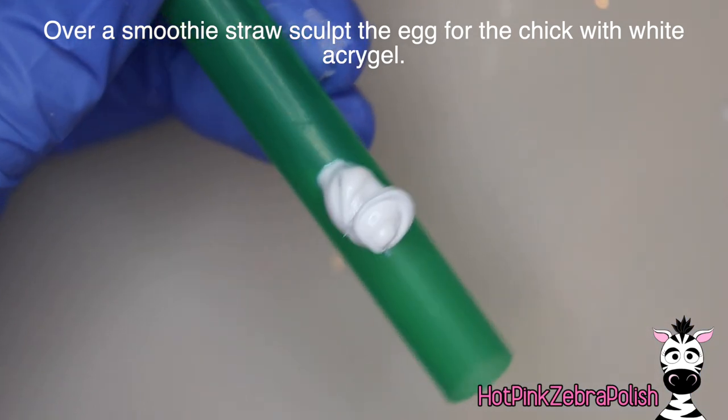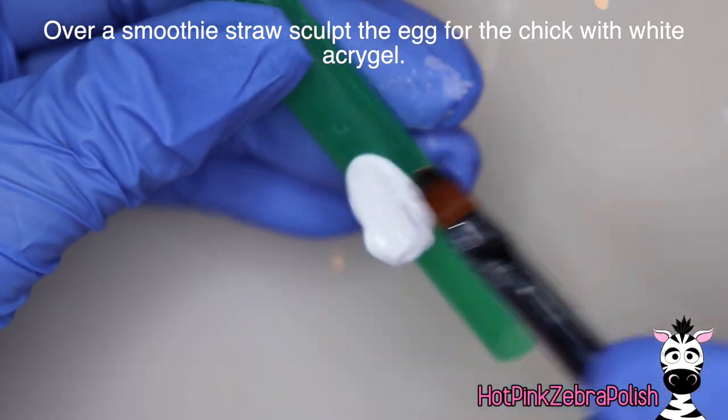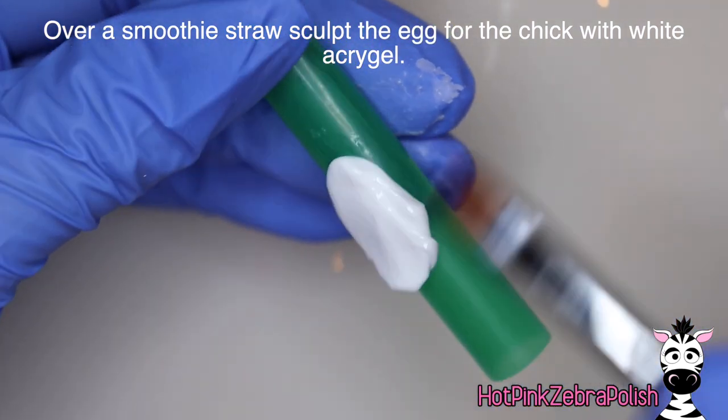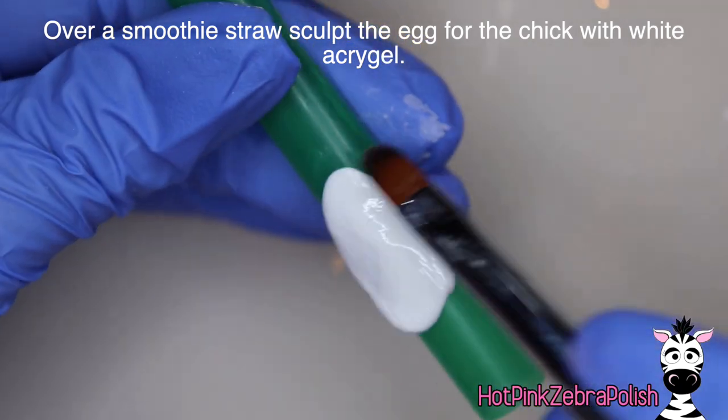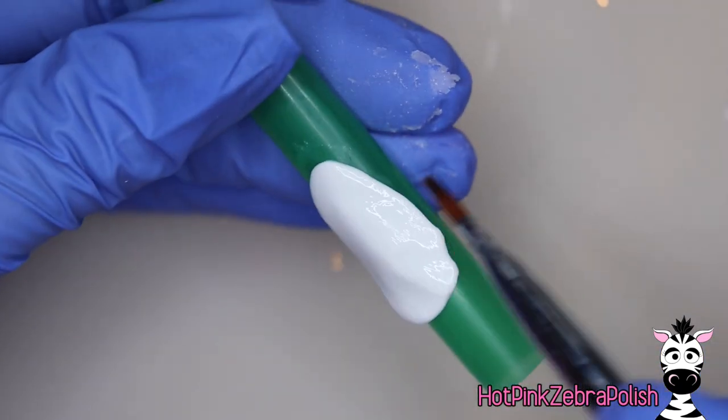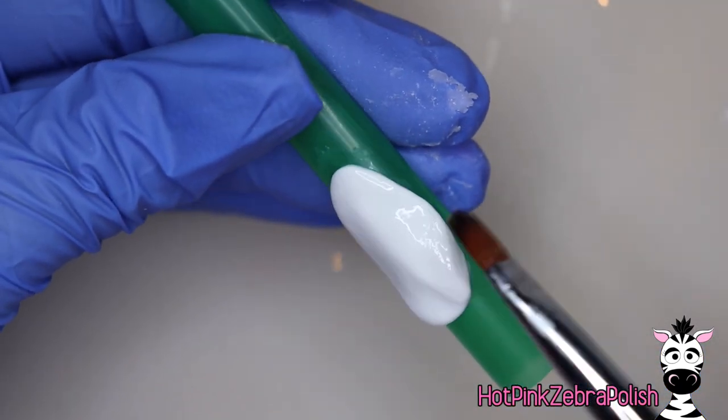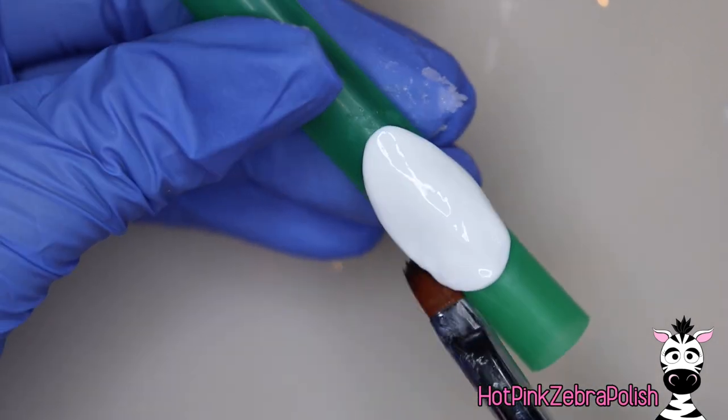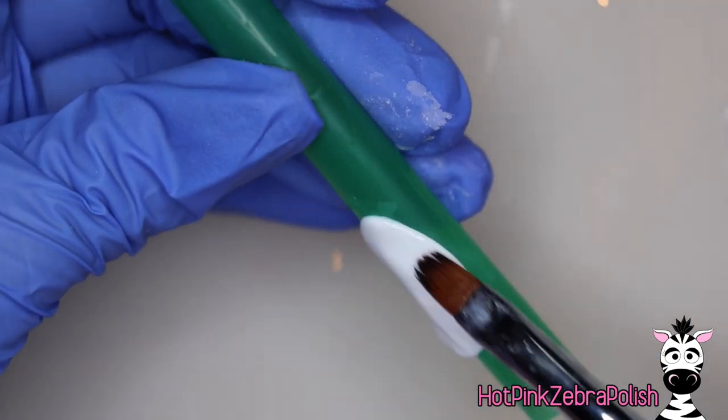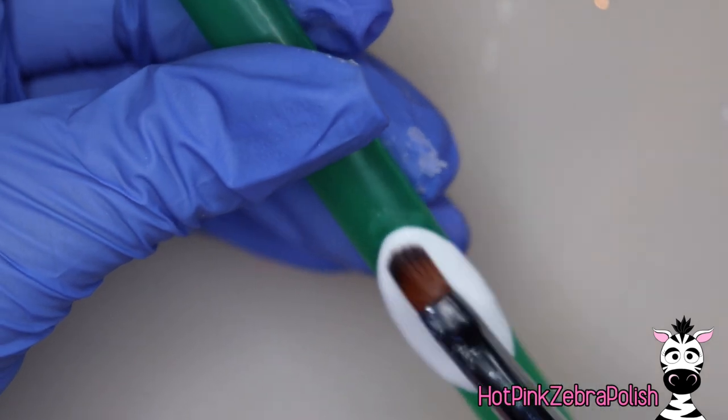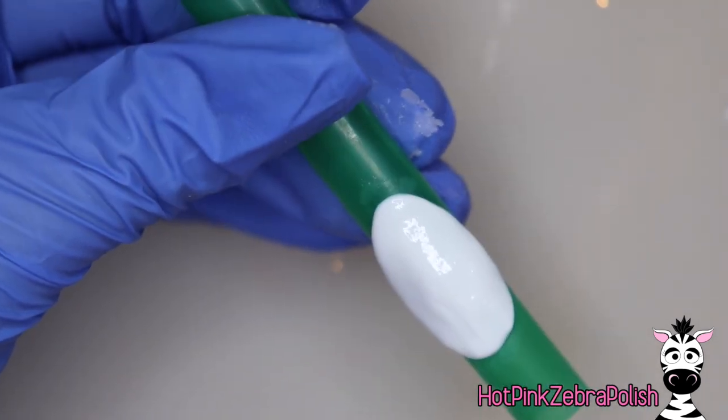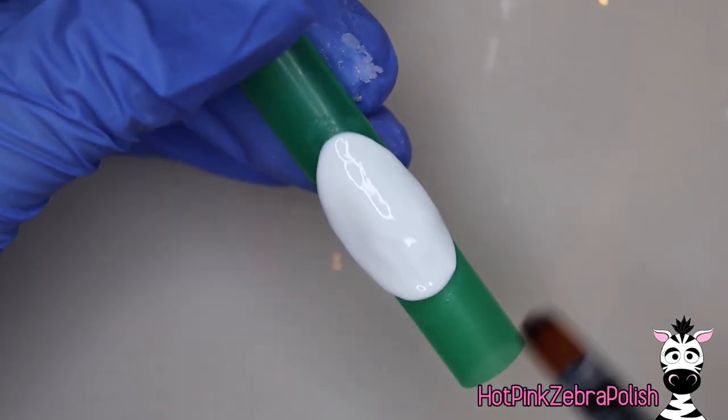So now over a smoothie straw we're going to be sculpting the egg for our chick and try to make it fairly large keeping in mind it has to be bigger than your chick if you want it to fully close. Mine ended up not fully closing and I liked it, it was good, it still moved, I liked the moving element of it. So we're just going to sculpt our large egg.